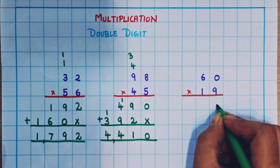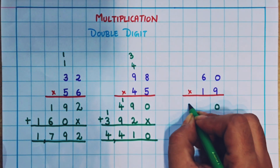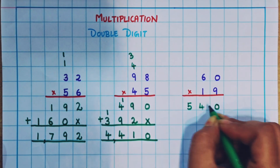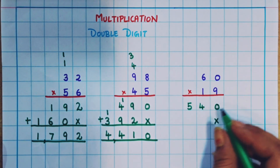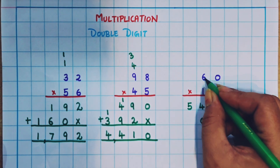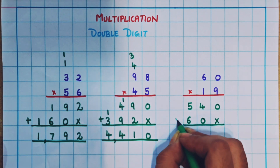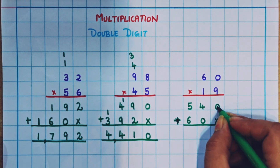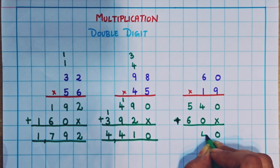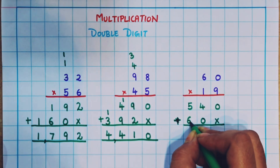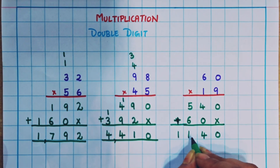Multiplication from the ones place: 9 zeros are 0, anything into 0 is 0, so here I'll write 0. 9 sixes are 54, so here I'll write 54. Now I'll put a cross mark. 1 zero is 0 again, and 1 six is 6. Now addition: 0 plus nothing is 0, 4 plus 0 is 4, and 5 plus 6 is 11. So here I'll write 11.